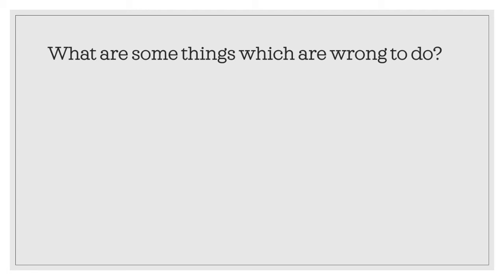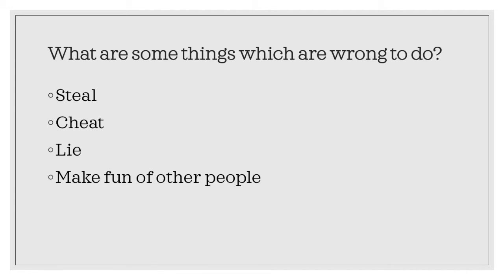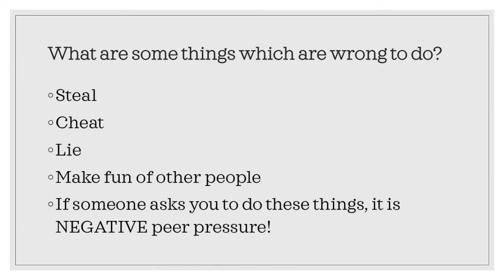What are some things which are wrong to do? Steal, cheat, lie, or make fun of other people. All four of these things are negative or bad choices. If someone asks you to do these things, it is negative peer pressure.